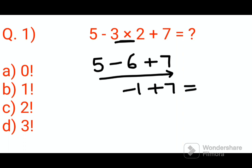That gets you 6. Now the answers to this problem are given in factorial form. For factorials: 0 factorial is 1 — I've also made a separate video explaining why. And 1 factorial is also 1.